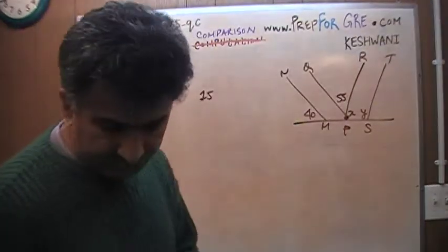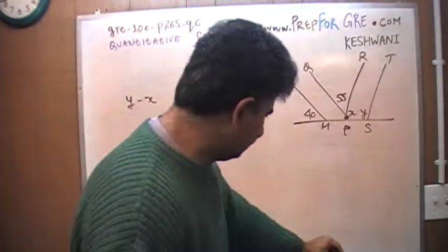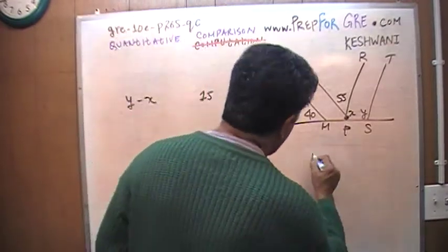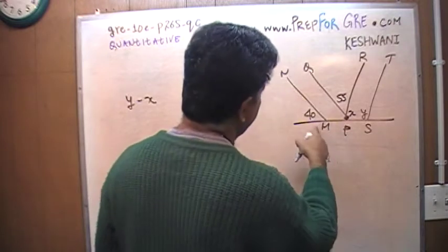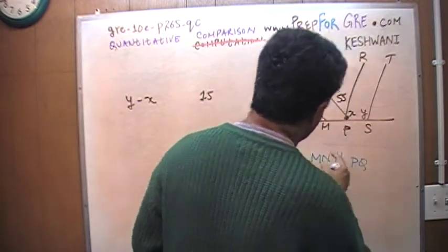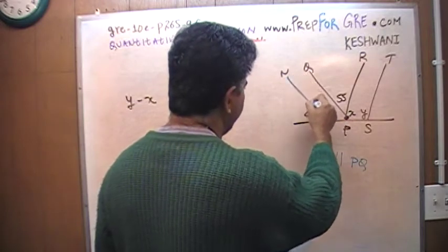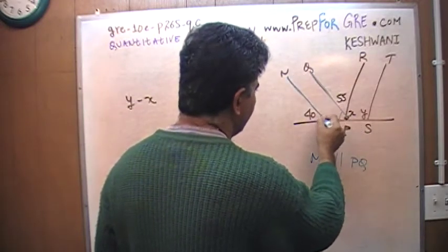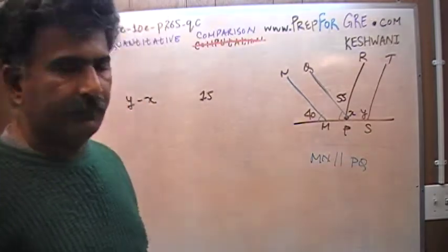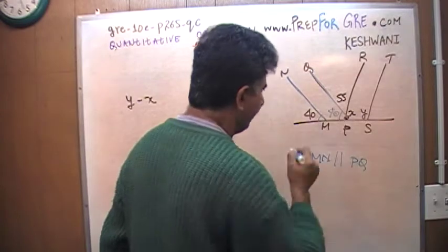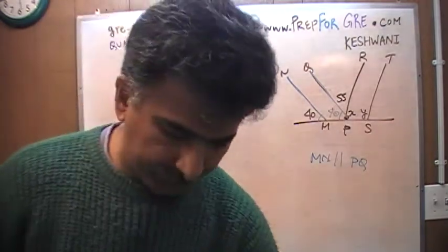The very first thing that we should notice is, at the very bottom of the picture, they tell you that line M, N is parallel to P, Q. If this line M, N is parallel to P, Q, then this angle has to be equal to this angle. That tells me that if this angle is 40, then this angle also has to be 40. So that takes care of that part.